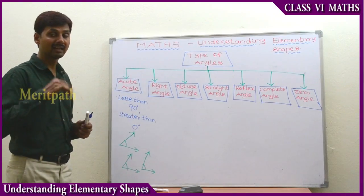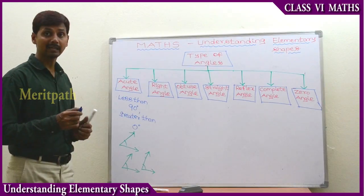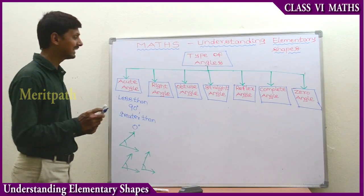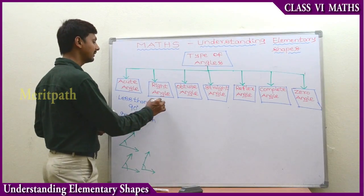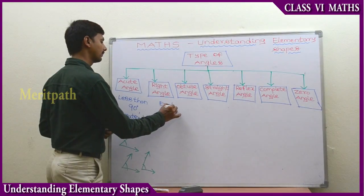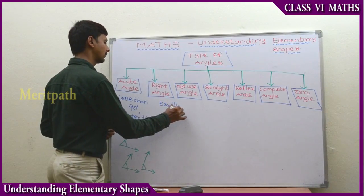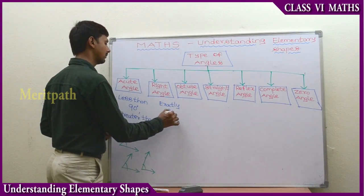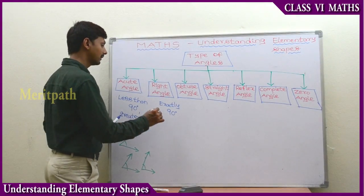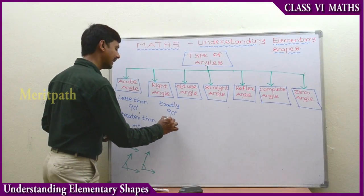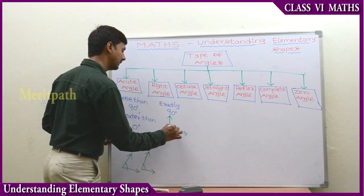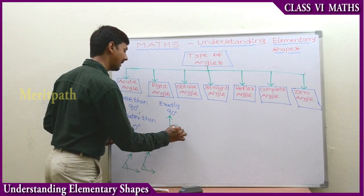Right angle: the angle which measures exactly 90 degrees - we call it a right angle. This is measured at exactly 90 degrees.